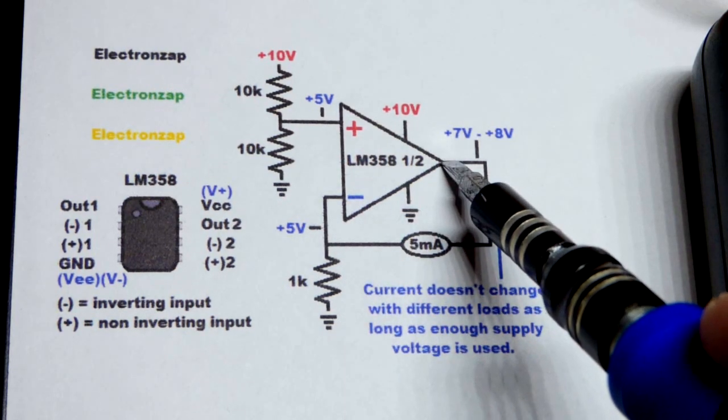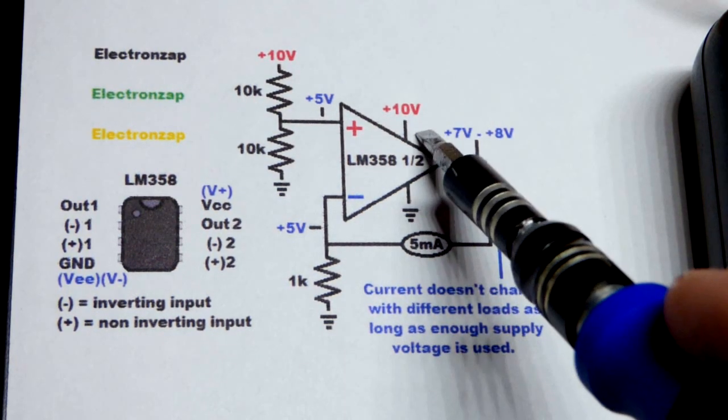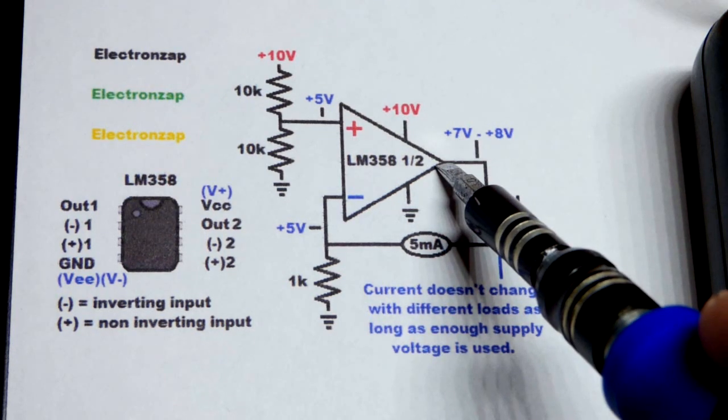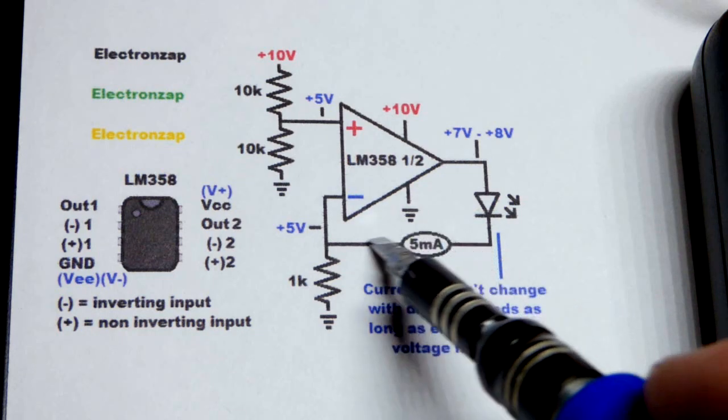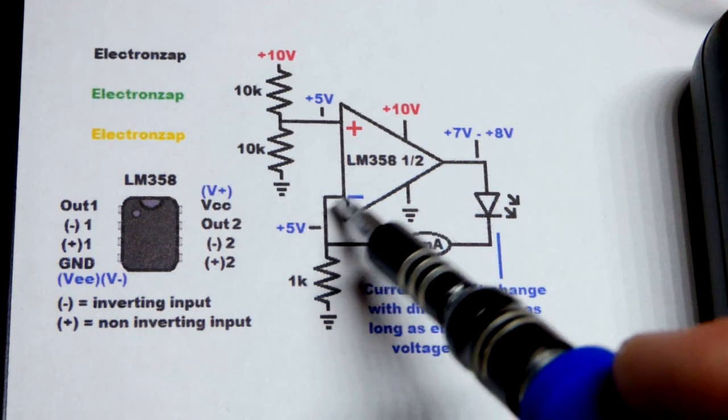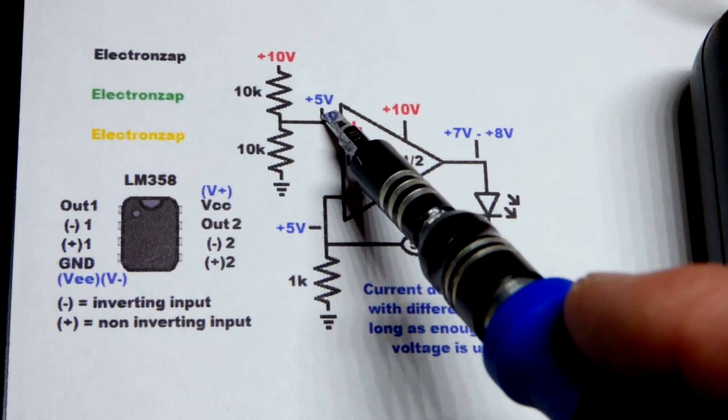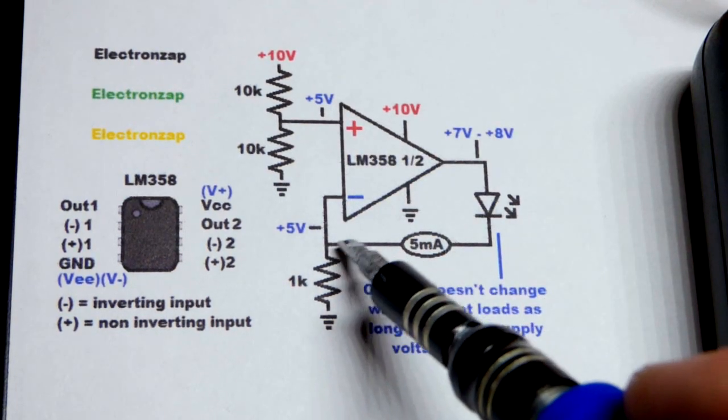The output changes its voltage as needed within limits, you only got so much power, but in any case, it changes its voltage as needed to hold the same voltage at the inverting input as the non-inverting input. So we can take advantage of that.